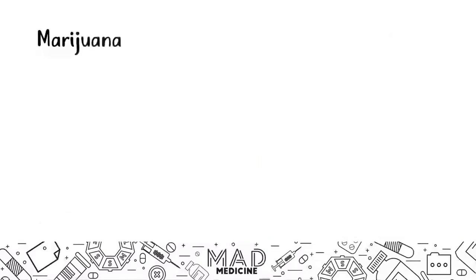The next thing to discuss is marijuana — also called grass, green, ganja, cannabis, etc. It is derived from the cannabis plant. A lot of people get confused between marijuana and hemp; both come from the cannabis plant, but hemp is the fibrous material, while marijuana comes from the bud or flower.